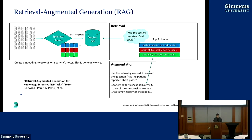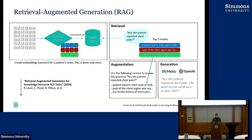The A stands for Augmentation. We take those three text chunks — we don't care about the vectors anymore — and put them into the prompt for the LLM. The prompt specifically says: 'Use the following context to answer the question: has the patient reported chest pain?' and literally pastes those three values in. The G stands for Generation — this is where the LLM does the synthesis and interpretation. In our case, this could be Meta's Llama 3 or OpenAI's ChatGPT, and of course this applies to any other LLMs.